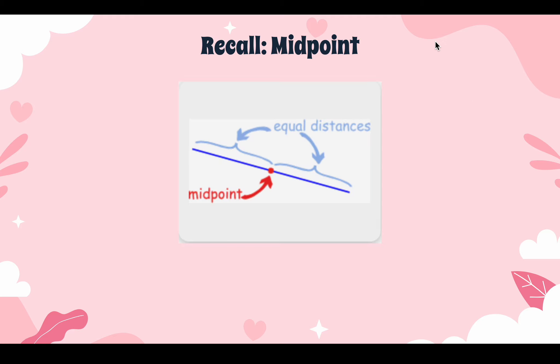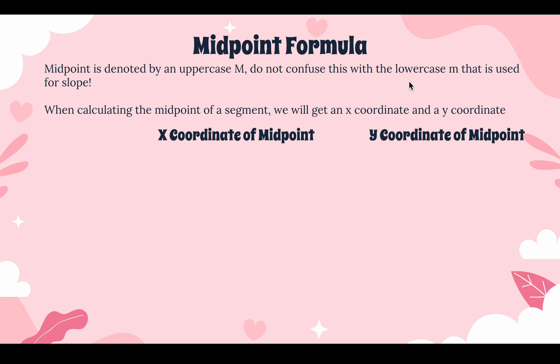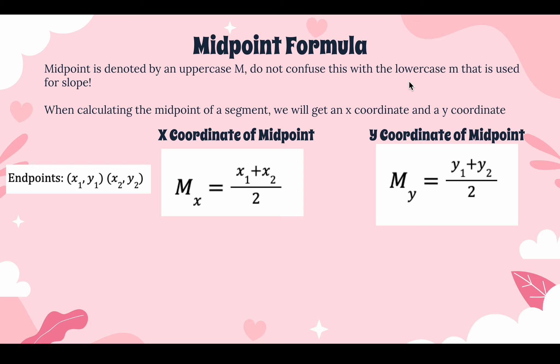Recall that a midpoint splits a segment into two congruent parts. We've dealt with midpoints a lot outside of a coordinate grid, but now we're going to apply this knowledge on a coordinate grid. Midpoint is denoted by an uppercase M, so don't confuse this with the lowercase m that's used for slope. It's really important when you're writing your variables that you're using the correct form, whether it's uppercase or lowercase, because sometimes the same letter is used for different things.